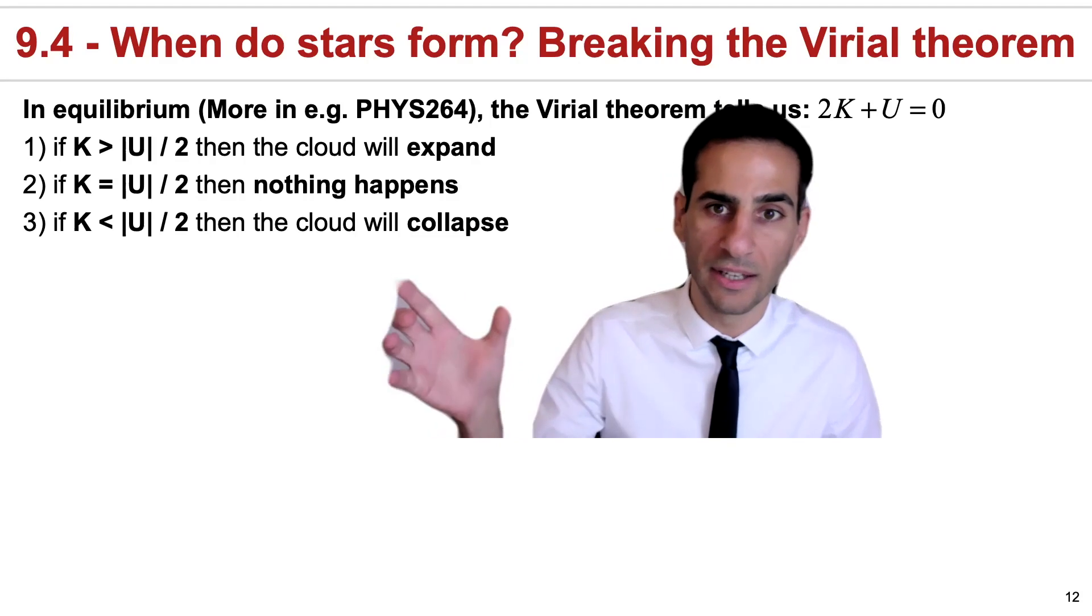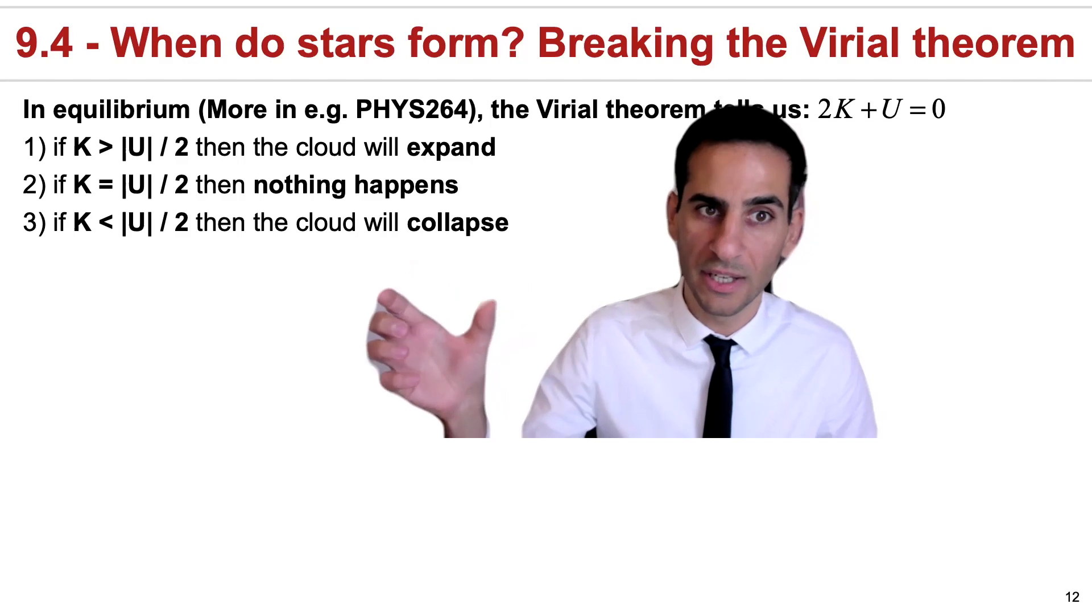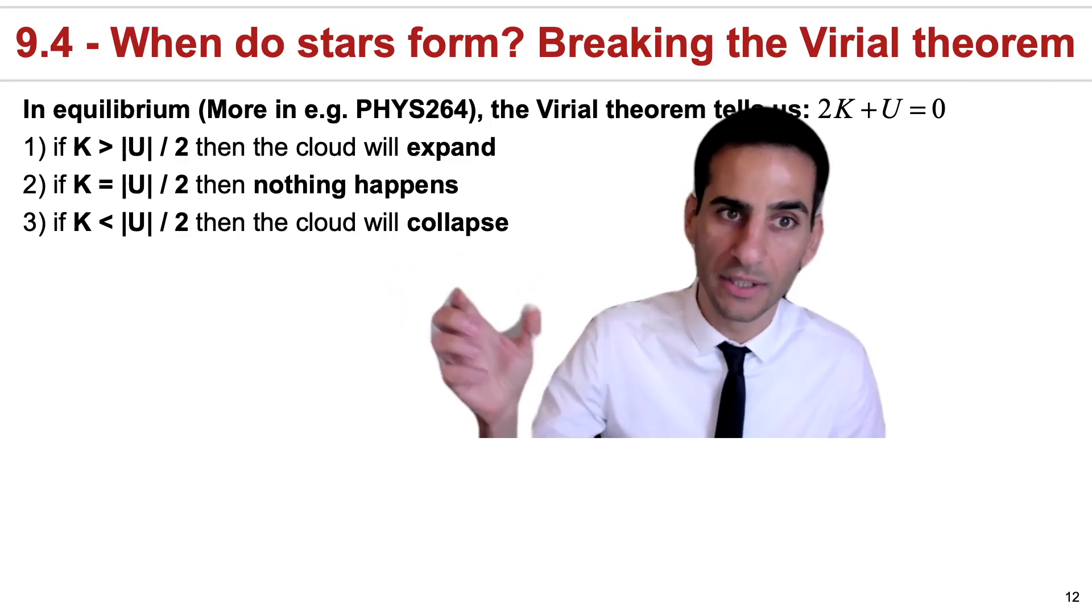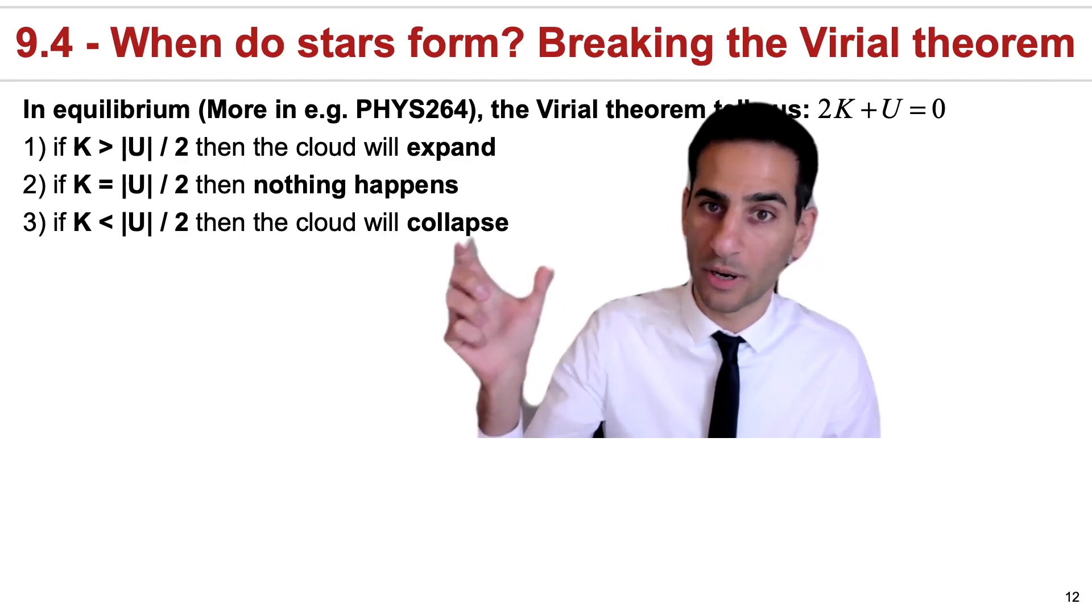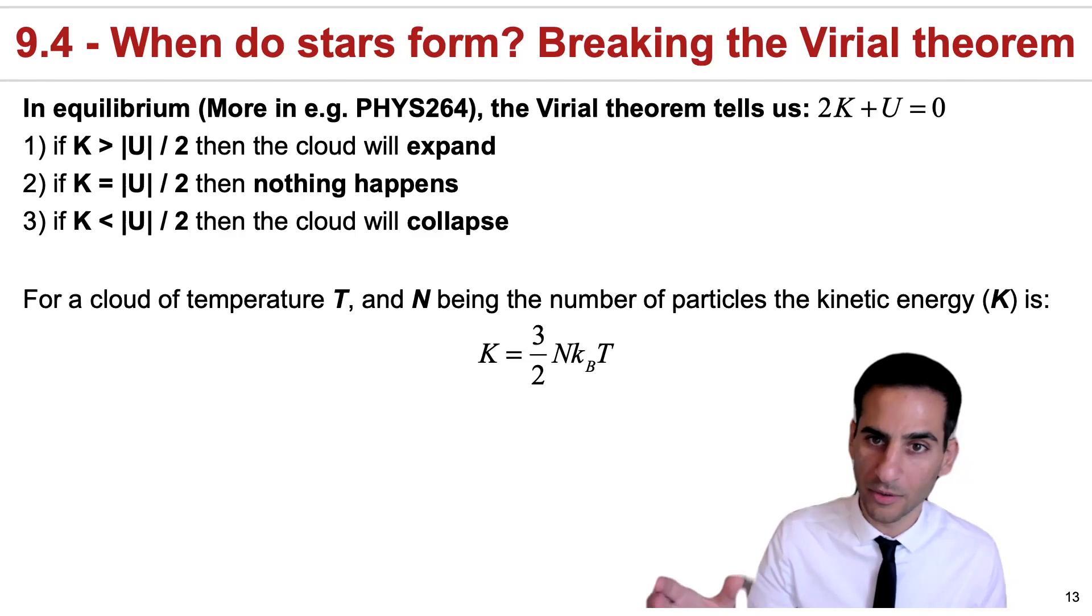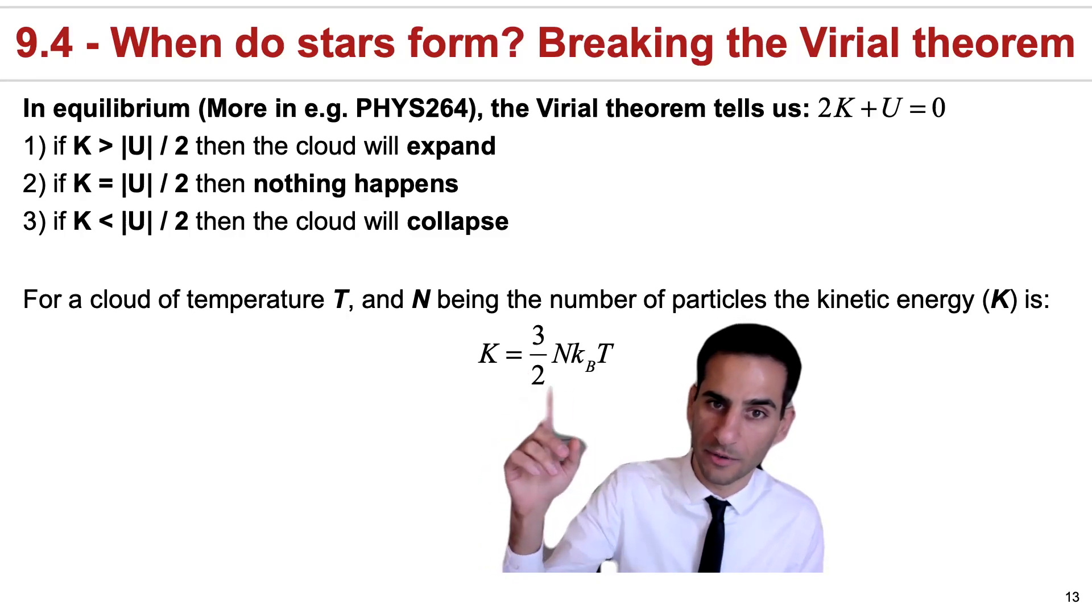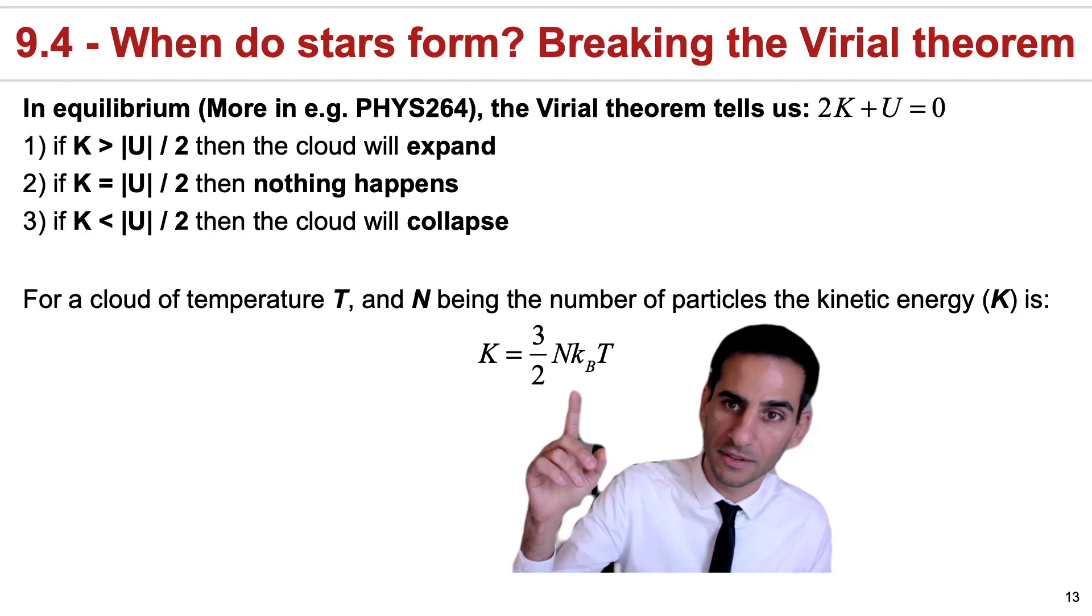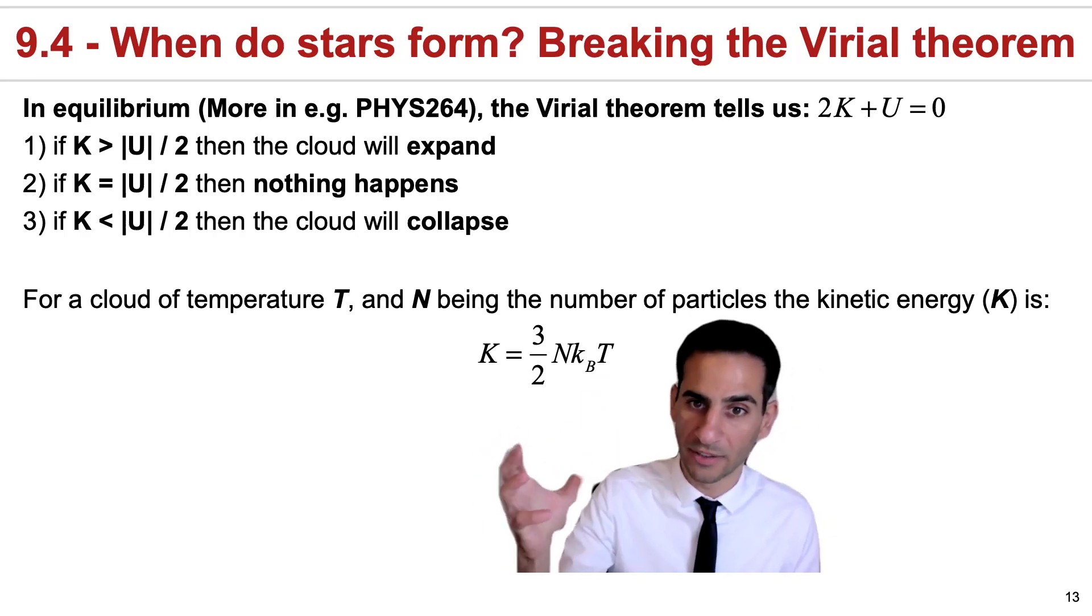And finally, and this is the condition we care about if the cloud is ever to form stars, if the kinetic energy is lower than the gravitational potential energy divided by two, then gravity will win and the cloud will start collapsing. For a cloud with temperature T and with N being the number of particles, the kinetic energy can be very simply written as K = 3/2 N k_B T. So the kinetic energy here is really driven by temperature.